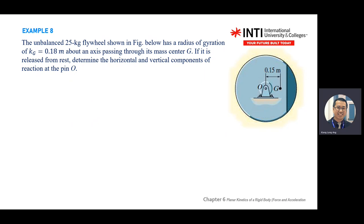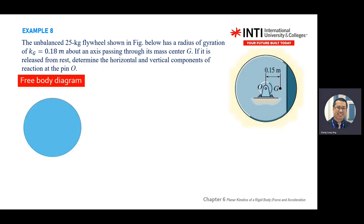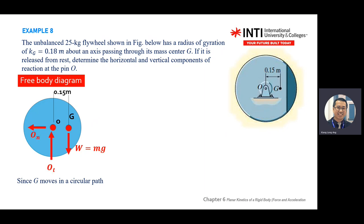The question uses k equal to 0.8 meters about the axis passing through the center. If released from rest, determine the horizontal and vertical components of the reaction at the pin. When you see a pin, automatically convert the pin forces into x and y. So free-body diagram: draw the object, draw the reaction at O, and then G. The center of mass G is always linked to W.